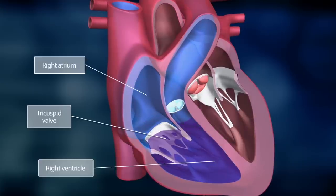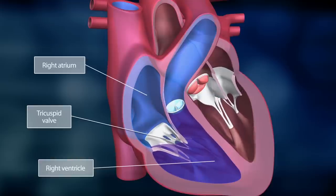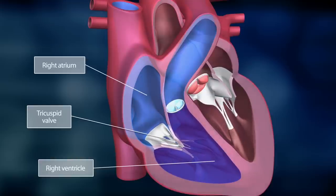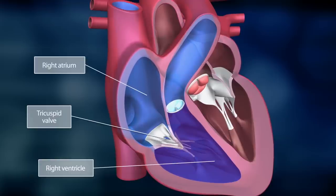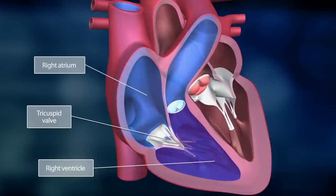When the right ventricle has filled with blood, the tricuspid valve closes, preventing blood from flowing back into the right atrium. Now the right ventricle contracts.